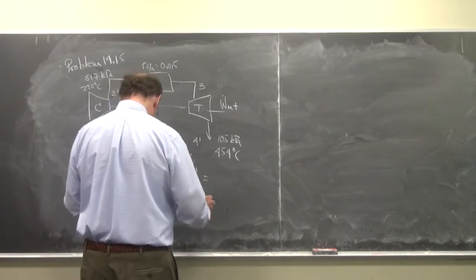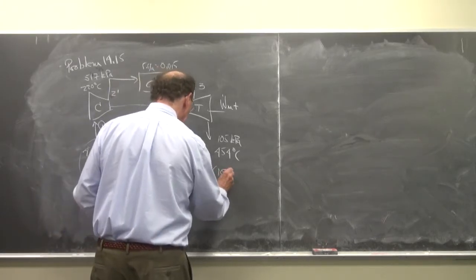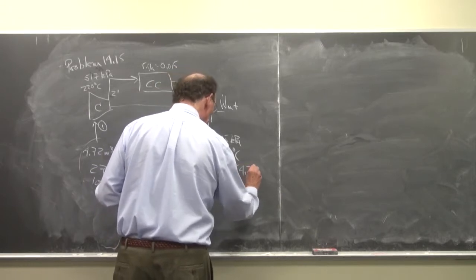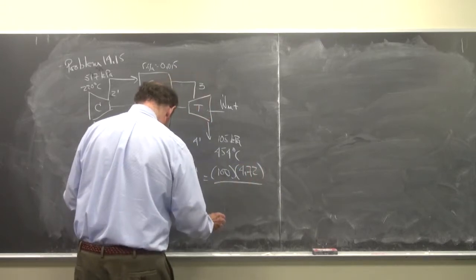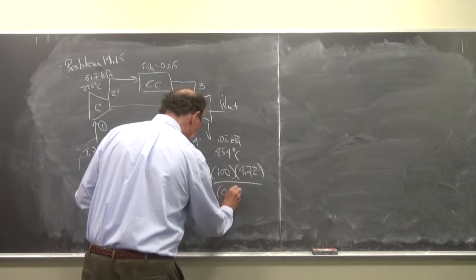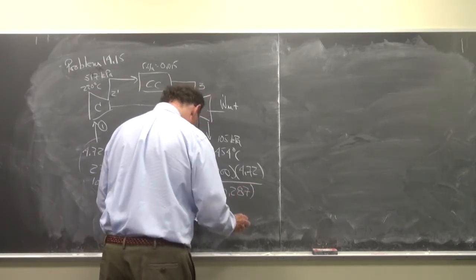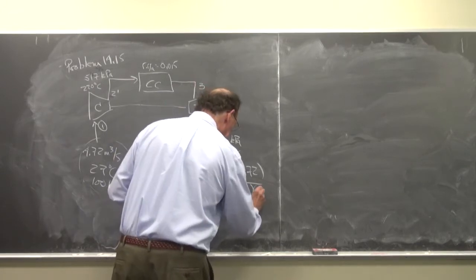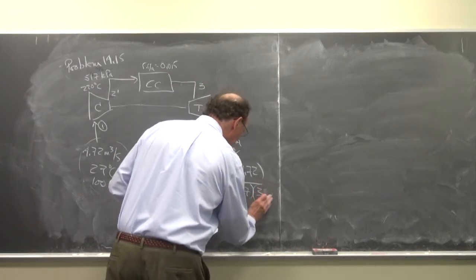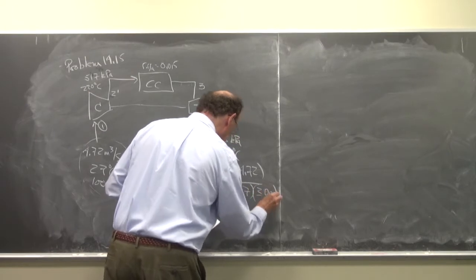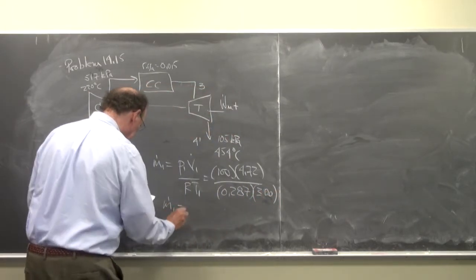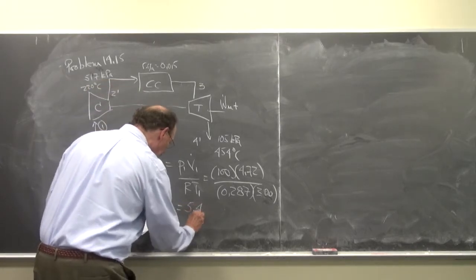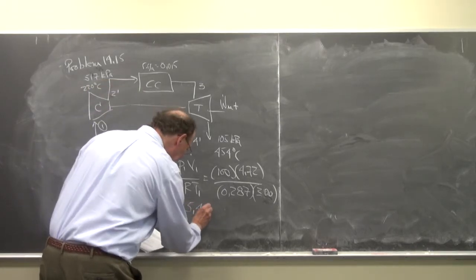P1 is 100, the volume flow rate is 4.72 divided by 0.287, and the temperature is 300 degrees K. And so we have that the mass flow rate is equal to 5.482 kilograms per second.